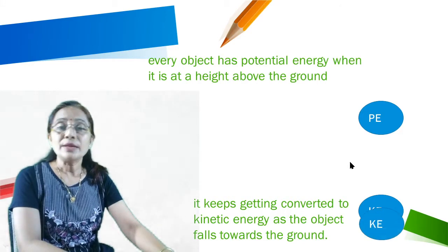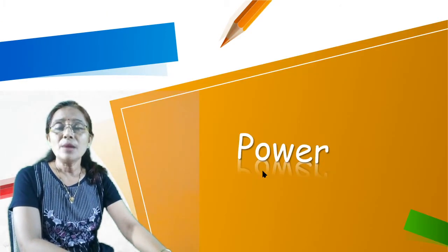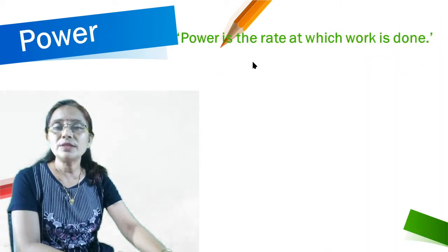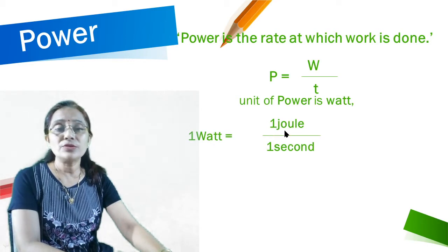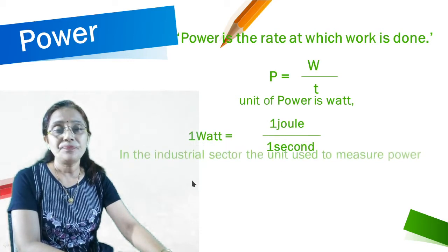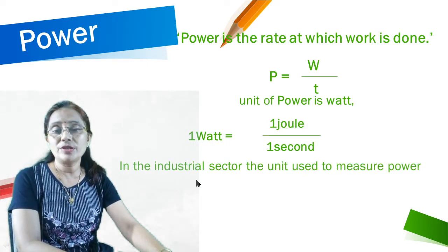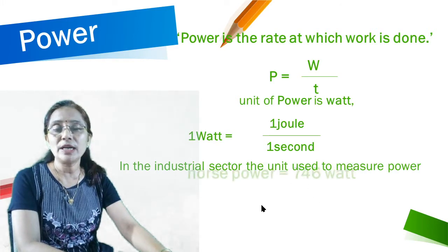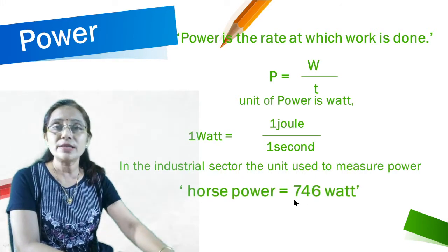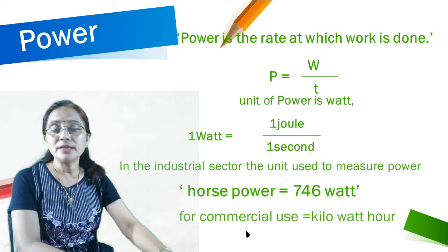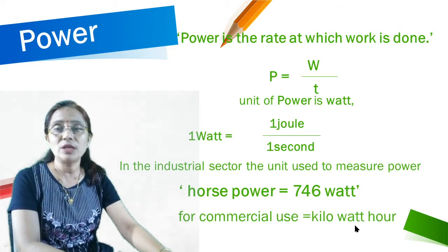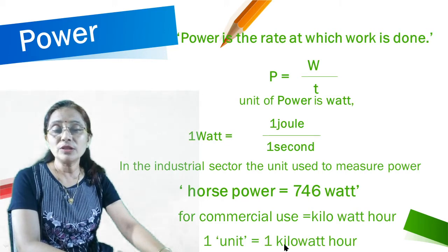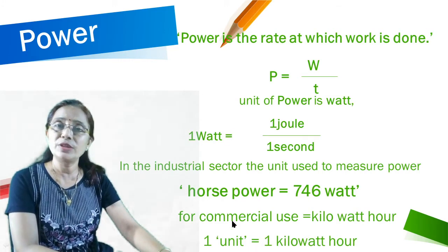Power is the rate at which work is done: P = W/t. The unit of power is Watt; 1 W = 1 Joule per second. In industrial use, the power unit is kilowatt (kW). In commercial use, the unit is kilowatt-hour (kWh), which means 1 unit of electrical energy. 1 kWh = 1 unit.